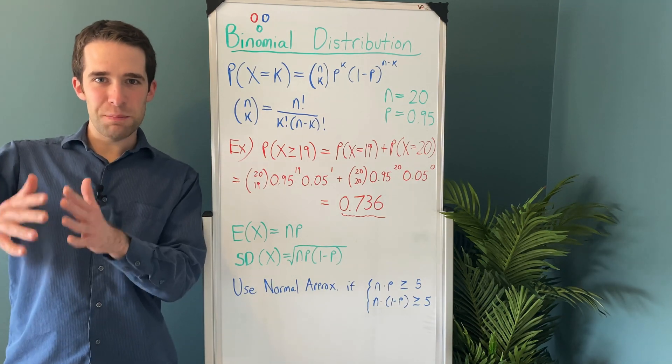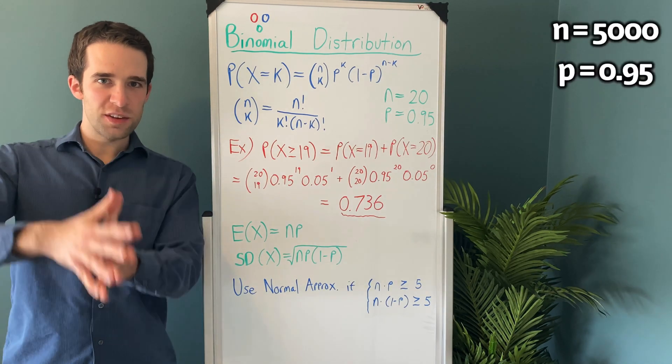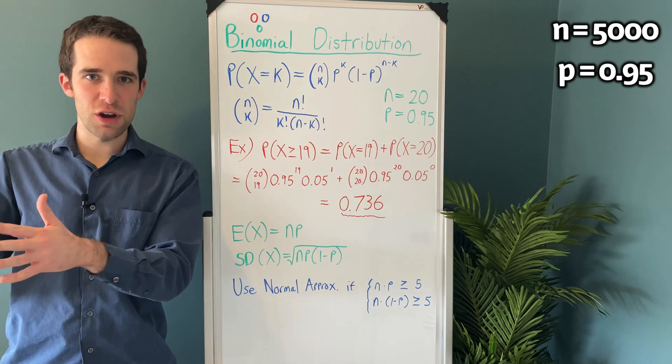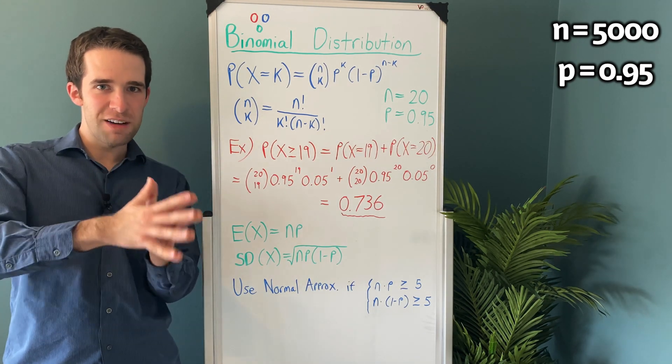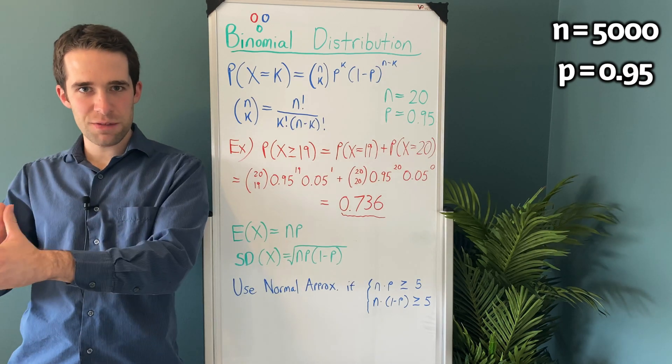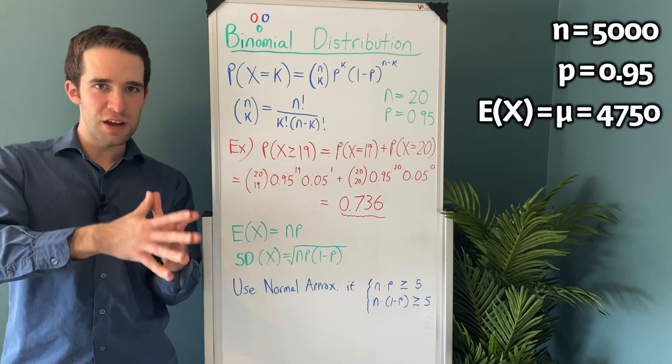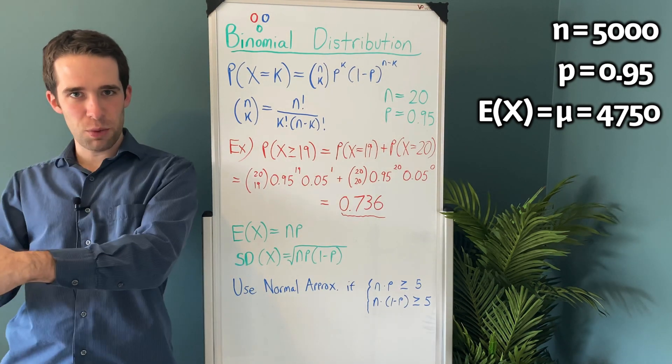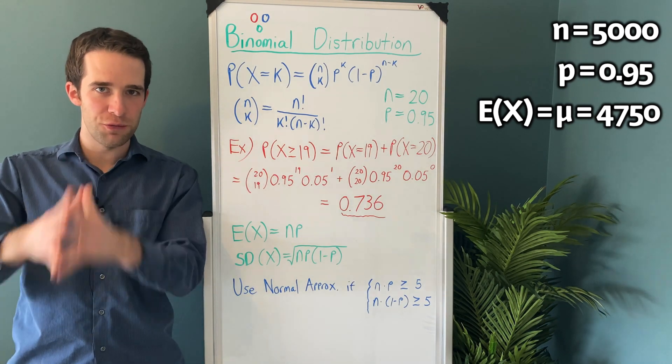Now let's extend this example again, and let's say we have 5,000 subjects who were exposed to the disease. Now you ask, what's the mean and standard deviation of the number of people who are going to survive? Well, the mean would be 5,000 times 0.95, that's 4,750, then just do the math for the standard deviation, square root of 5,000 times 0.95 times 1 minus 0.95, and you'll get a standard deviation of 15.4.